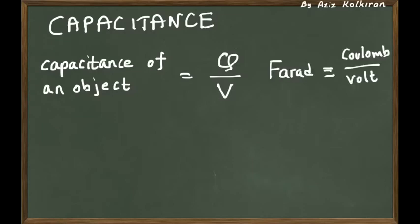This new physical quantity has, of course, its own unit. Since Q is in Coulombs and V is in volts in the SI unit system, we call this special ratio — Coulombs divided by volts — a farad. It is the unit of capacitance.